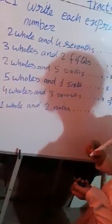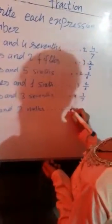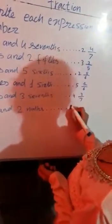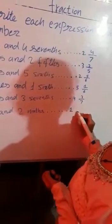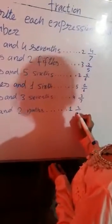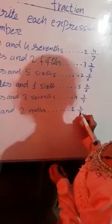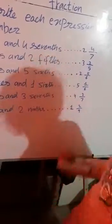Now we are doing Part F: 5 whole and 2/9. So we will write 1 on the side part, 2 on the numerator side, and 9 on the denominator side.